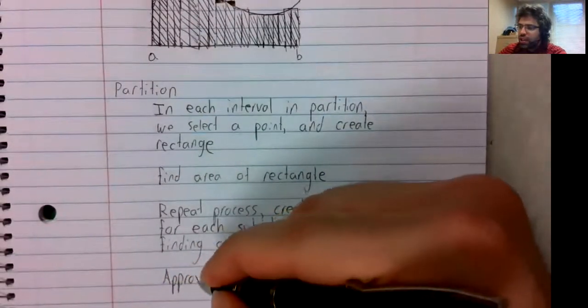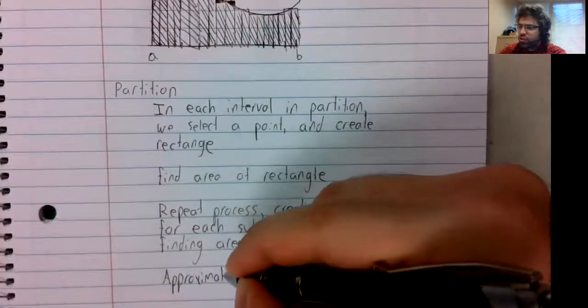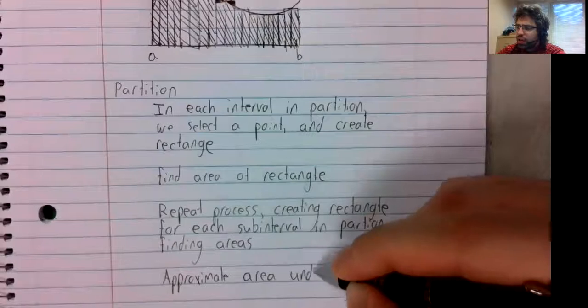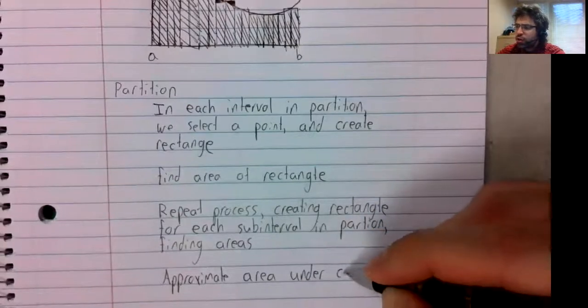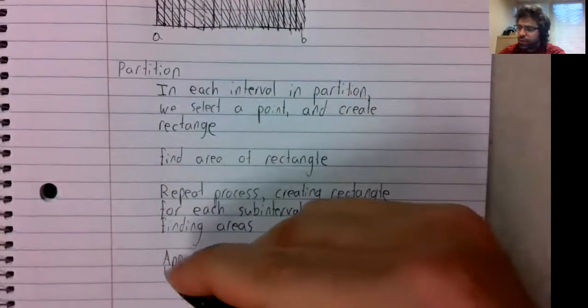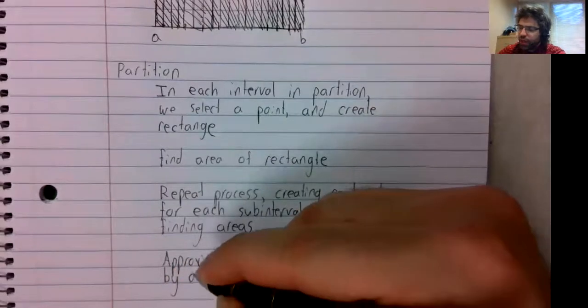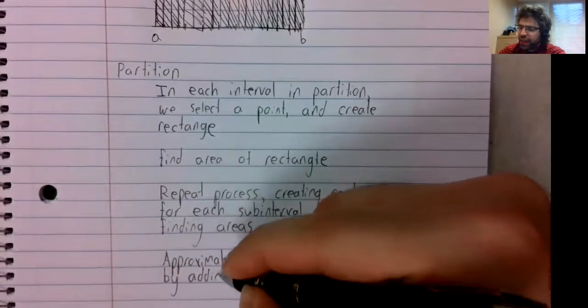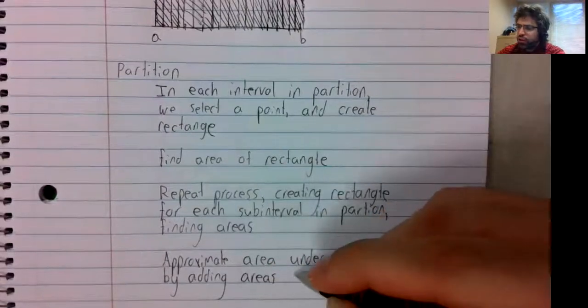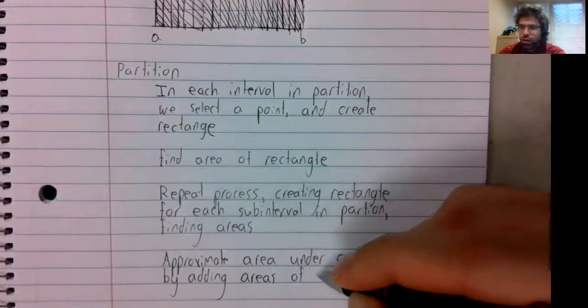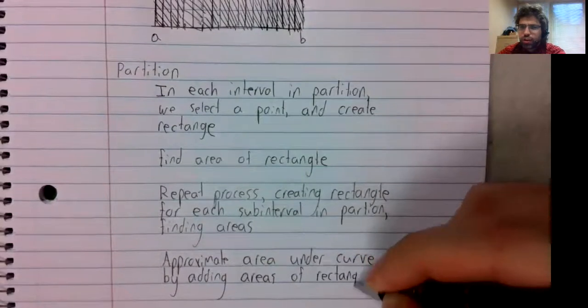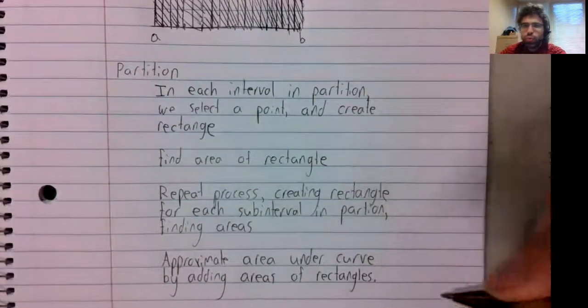And we can approximate the area under the curve by adding the areas of the rectangles.